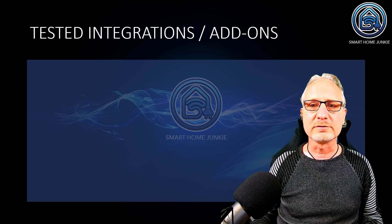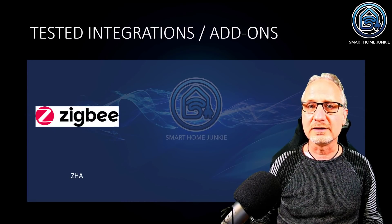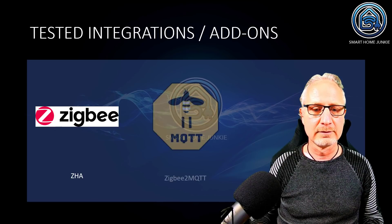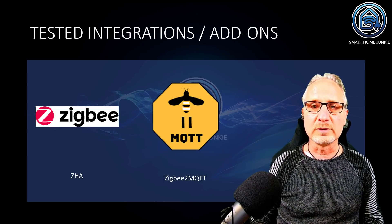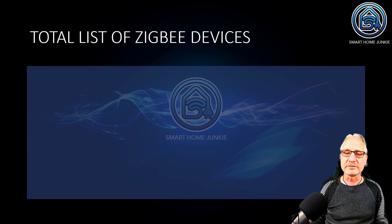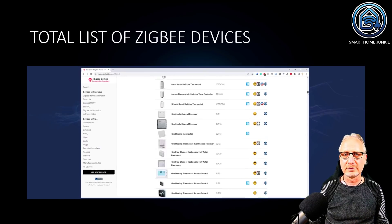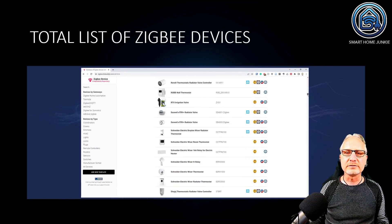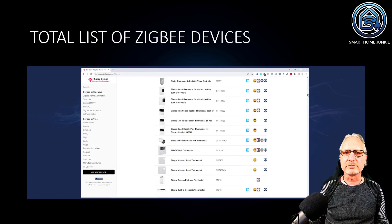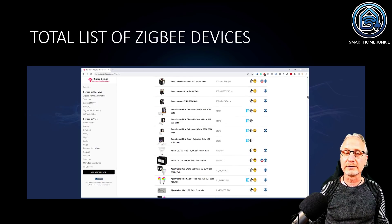The integrations and add-ons that I tested were ZHA, which is a default integration in Home Assistant, Zigbee2MQTT, which is an add-on, and deCONZ, which is also an add-on. The total list of Zigbee devices supported by these integrations can be found in a list where, for every device, you can see if the integration supports that device — which is really handy to know before you start installing an integration.